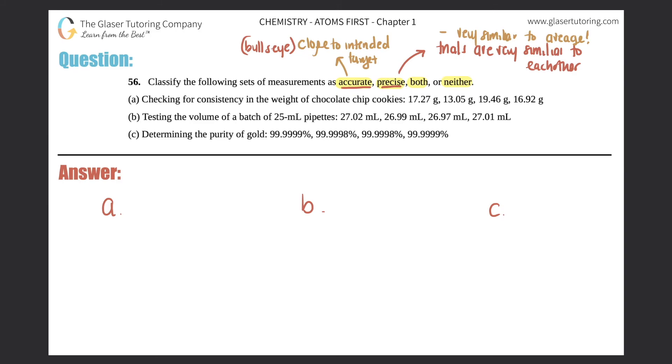Let's check a. It says checking for consistency in the weight of a chocolate chip cookie, and they give you these four values: 17.27 g, 13.05 g, 19.46 g, 16.92 g. So first let's talk about precision. Precision is a little bit easier I think than accuracy.